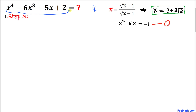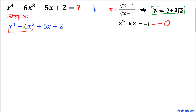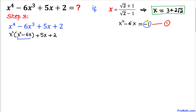Now let's find the value of the polynomial. Looking at the polynomial x⁴ - 6x³ + 5x + 2, we can factor out x² from the first two terms. Factoring out x² gives us x²(x² - 6x) + 5x + 2. Inside the parentheses, x² - 6x is simply equal to -1 from equation 1, so this becomes x²(-1) + 5x + 2.